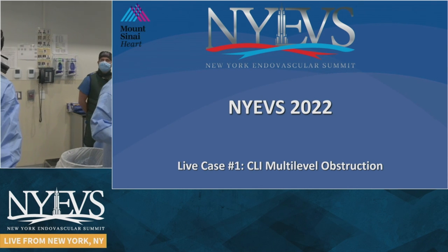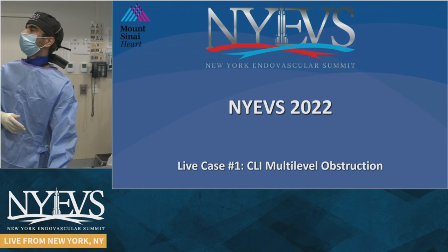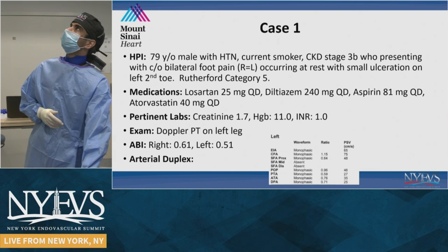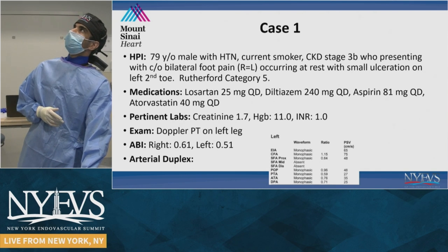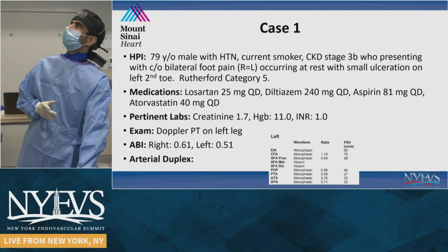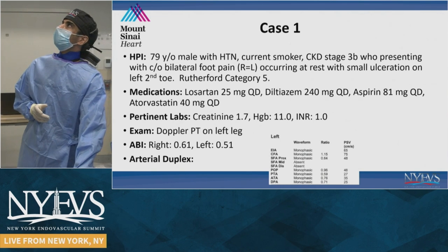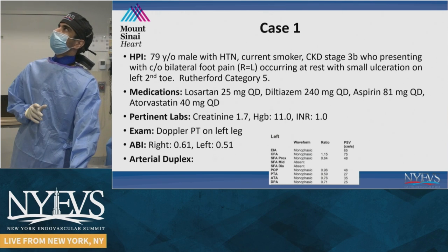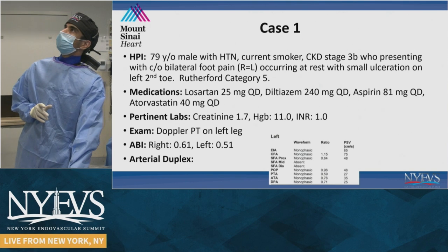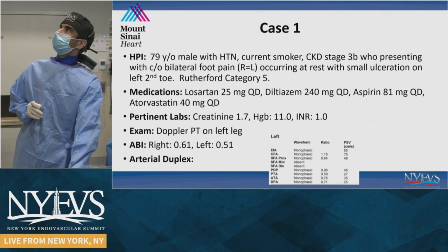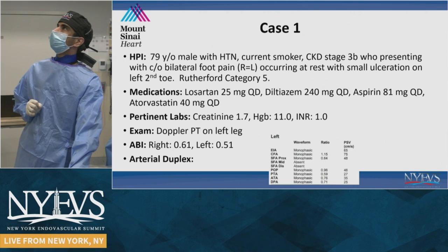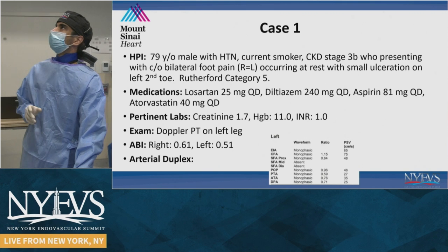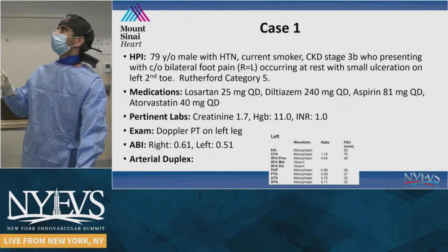Good morning. This is a CLI multi-level obstruction. The patient is a 79-year-old with hypertension, smoking history, and CKD stage 3B. He came in with bilateral foot pain occurring at rest and a smaller ulceration on the dorsal side of the left second toe. He is Rutherford category five. Creatinine is 1.7. Doppler shows a monophasic PT on the left. ABIs are 0.61 on the right and 0.50 on the left. Duplex shows monophasic waveform throughout with depressor block.